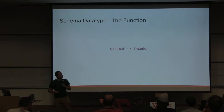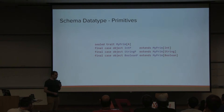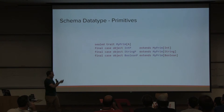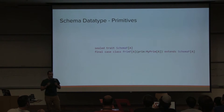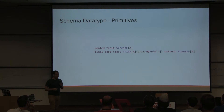The first thing we have to do is capture primitives, as they'll be our terminal cases for all derivations. We do this by introducing an ADT that allows us to capture types as values — a MyPrim trait with type parameter A, and three case objects each extending MyPrim with one specific type. Then we add a prim schema case that takes some MyPrim and makes it a schema of whatever A that MyPrim carries.